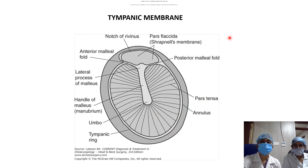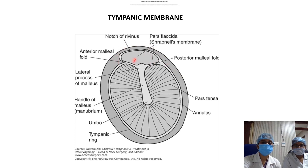This diagram of the tympanic membrane shows the distribution of fibers, the anterior and posterior malleal folds, the notch of Rivinus, and the pars flaccida, in which the fibers are loosely arranged and not taut.